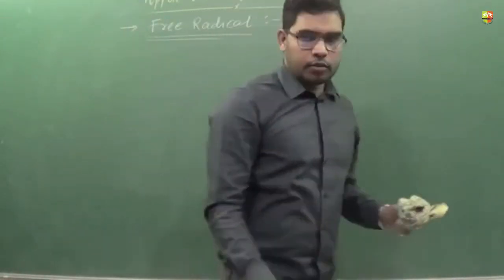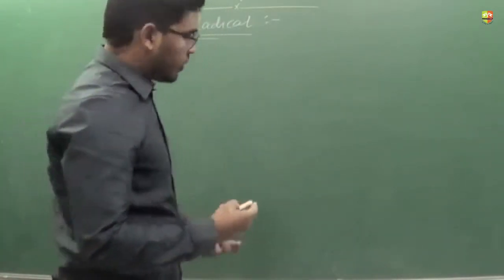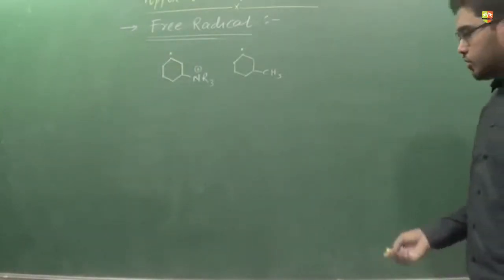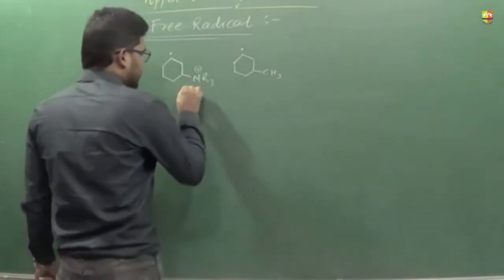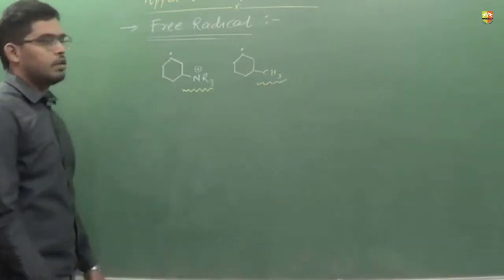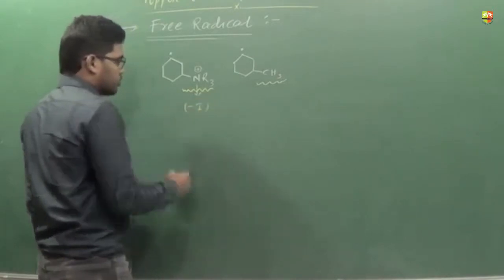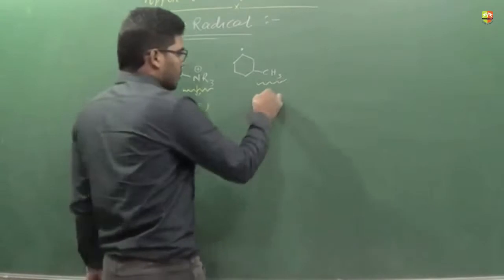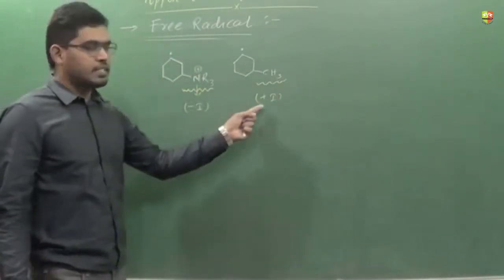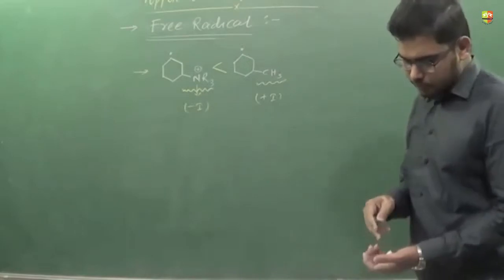So on the basis of this, we will discuss a few examples. I am taking NR3 and CS3. The difference in the molecule is the group attached. This group shows minus I — strongly minus I effect, a very strong minus I group. And this one shows plus I. Our stability of free radical is directly proportional to plus I and inversely proportional to minus I, so the order of stability follows accordingly.